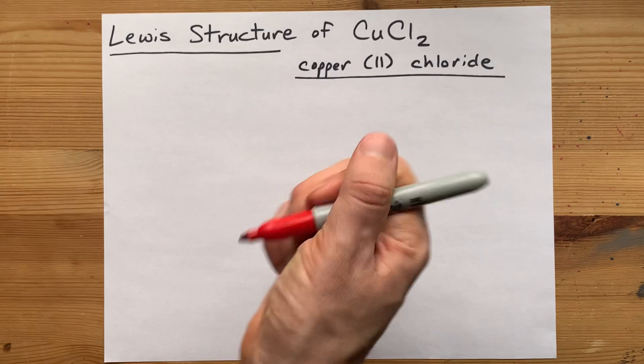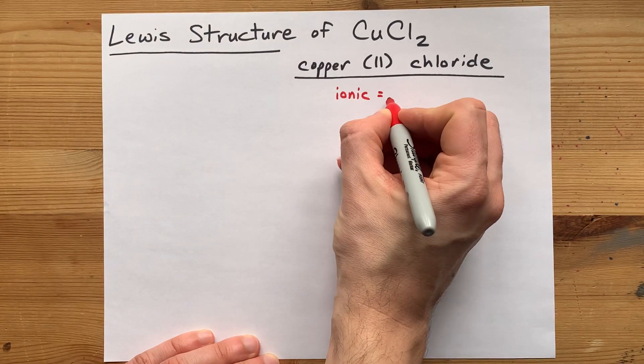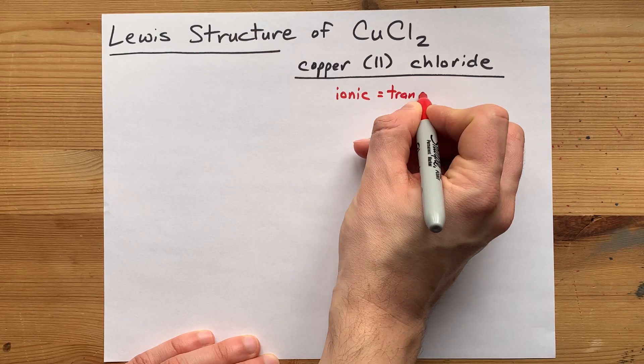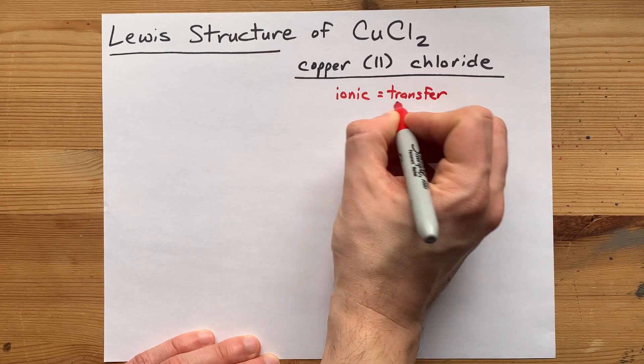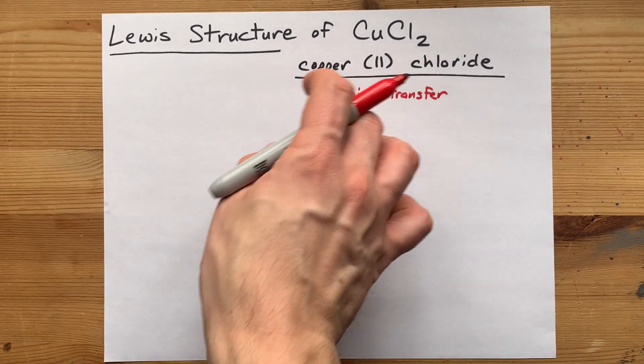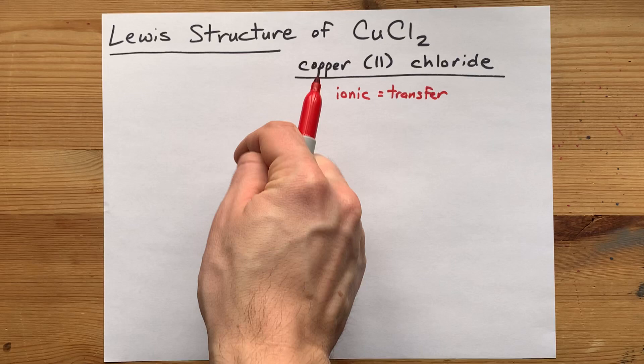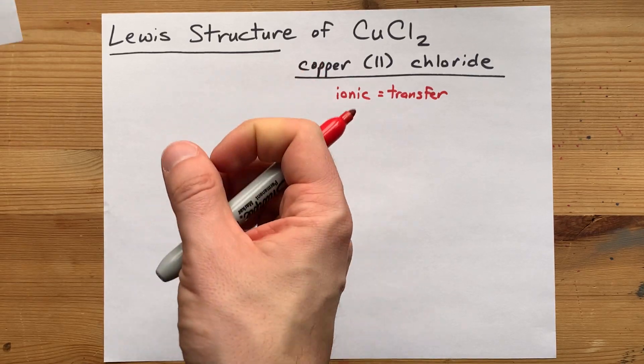The reason that's important is that metals combine with non-metals to make ionic compounds, and that is a transfer of electrons from one atom to another, always from metal to non-metal. Now, to show this happening, you have to know how many valence electrons copper brings.